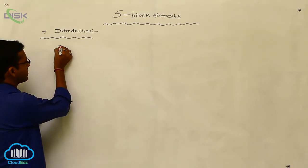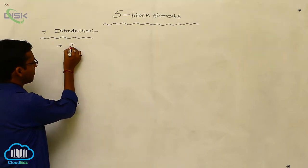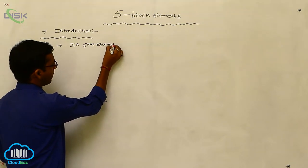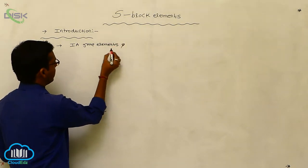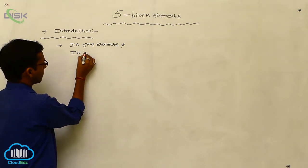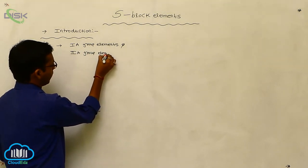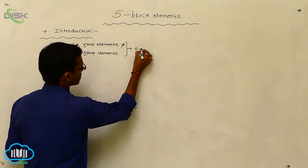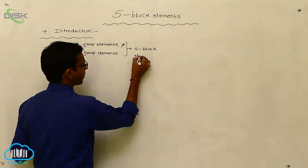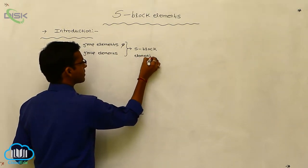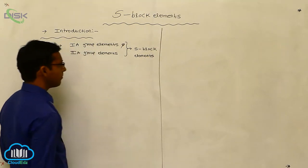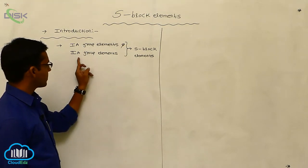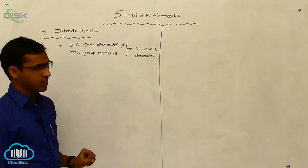The S-block elements generally include the first A-group elements and second A-group elements. First A-group elements and second A-group elements are commonly called S-block elements.